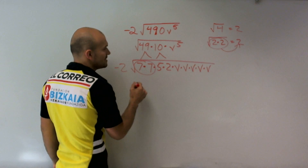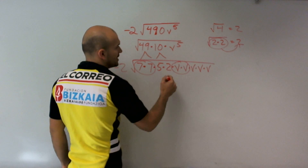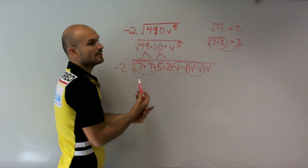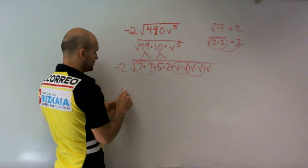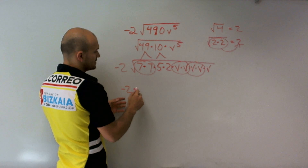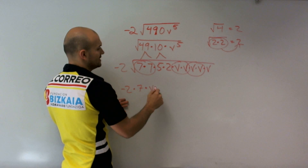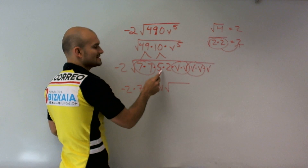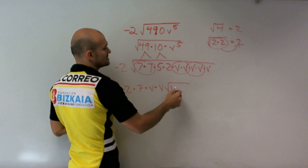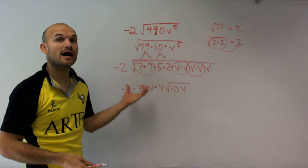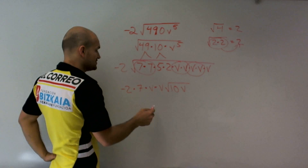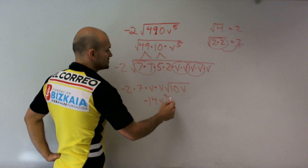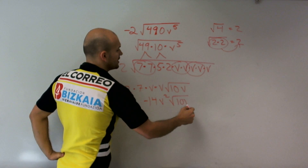So what numbers can I pull out? I have 7 times 7, a pair of b times b, and another pair of b times b. I can take these numbers outside of my radical. So I have negative 2 times 7 times b times b times what's left inside: 5 times 2, which is 10, times b. On the outside, negative 2 times 7 is negative 14.